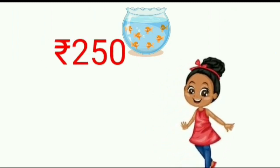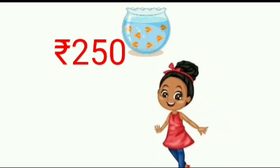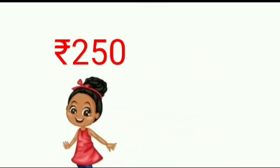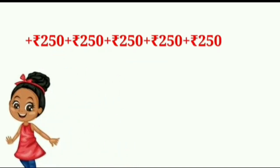Each bowl costs 250 rupees. Let us calculate the total cost of the five bowls: 250 plus 250 plus 250 plus 250 plus 250. We need to add 250 five times. So in short form we can multiply 250 by five. This is also called the multiplication process.